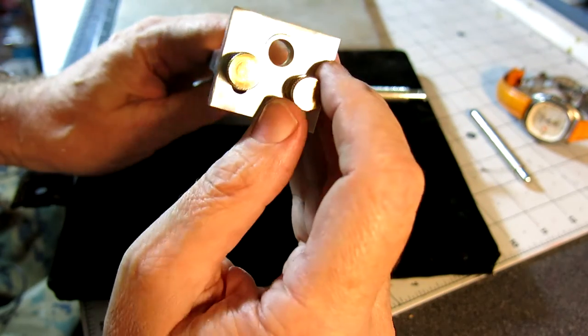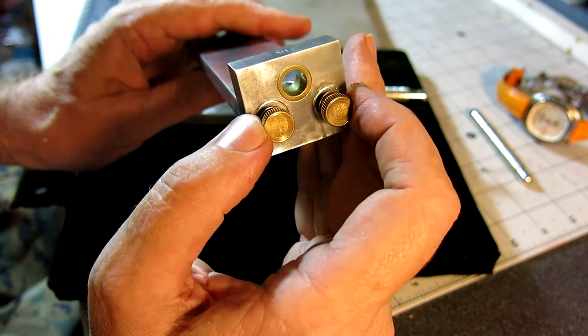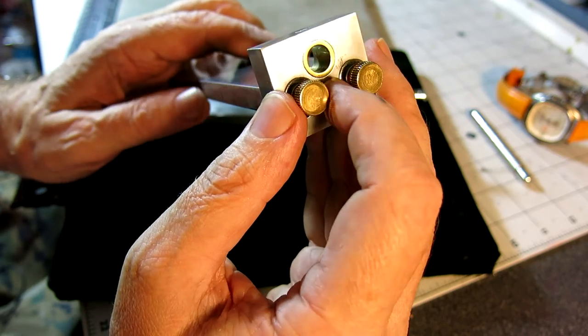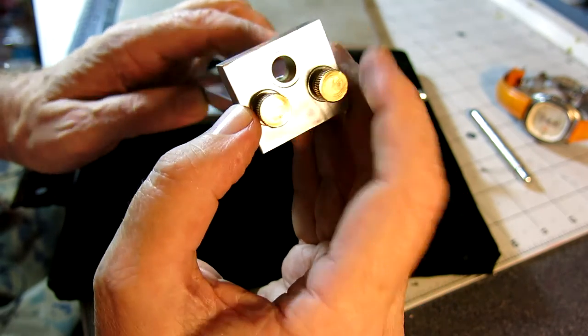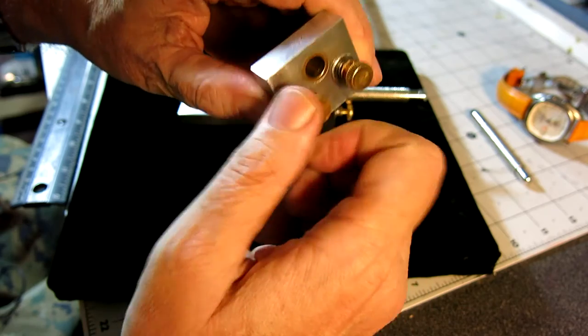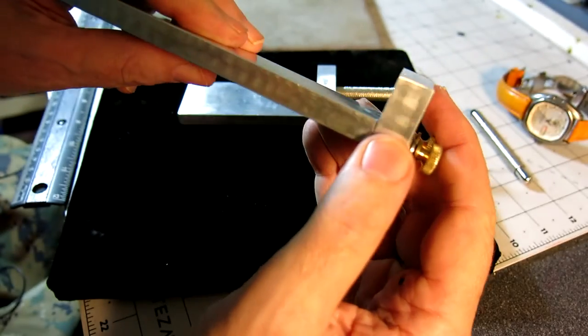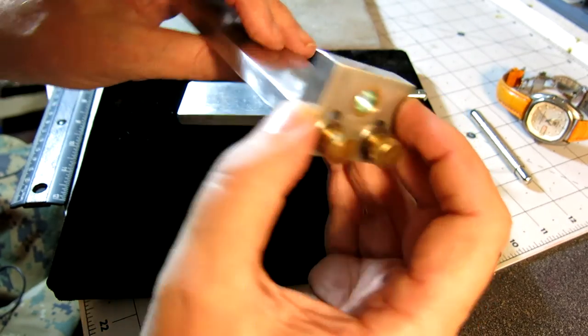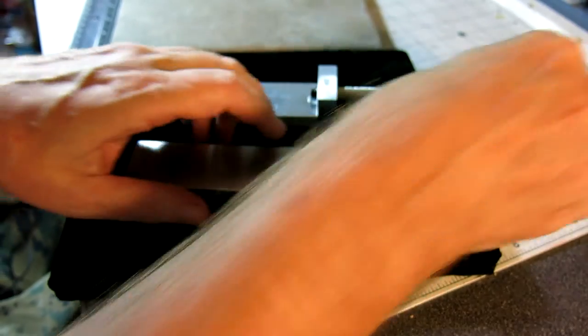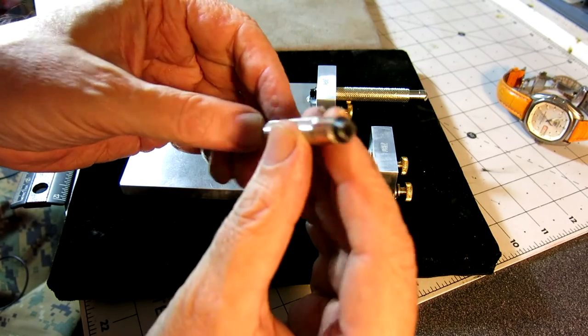All aluminum, the thumb screws are brass, and the hardware in there is stainless steel. Completely adjustable, so it'll work with a variety of different size crowns.